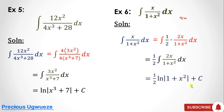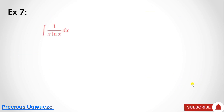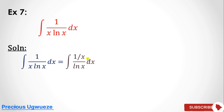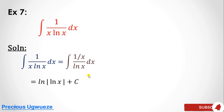The next example requires integrating 1/(x·ln(x)). We can bring the x up, giving 1/x divided by ln(x). We know the derivative of ln(x) is 1/x, so the condition is immediately satisfied and the solution is the natural log of ln(x), plus constant C.